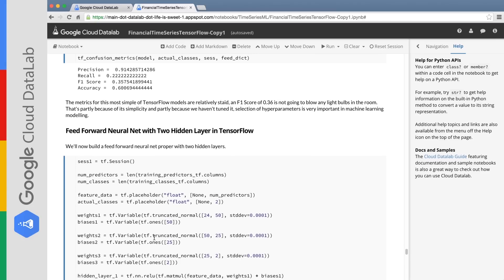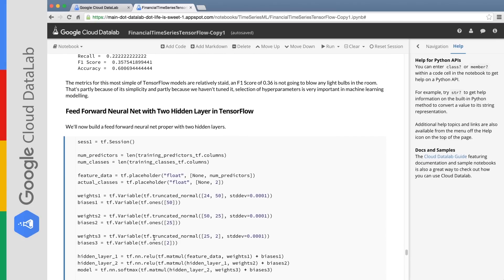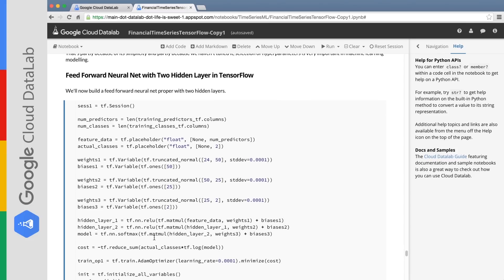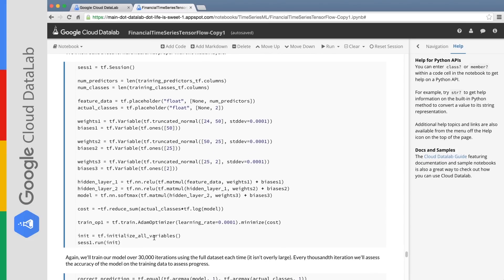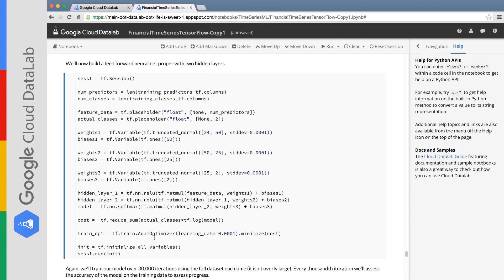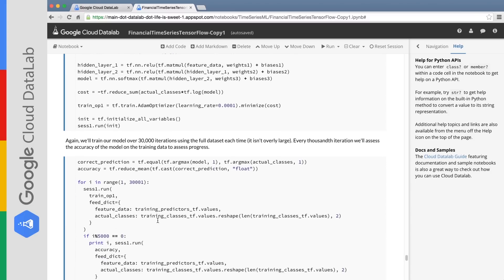Now, let's see if we can do better with our more sophisticated model. Next, we're going to build a feed-forward neural net with two hidden layers in TensorFlow. One of our hidden layers is going to have 50 nodes and the second hidden layer is going to have 25 nodes. Here you can see the model. It's really not very much longer than our original model, which is a testament to the power of TensorFlow. It's possible to do very sophisticated modeling in TensorFlow in relatively few lines of code.